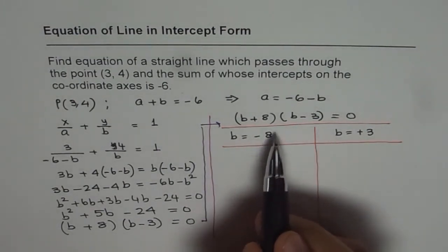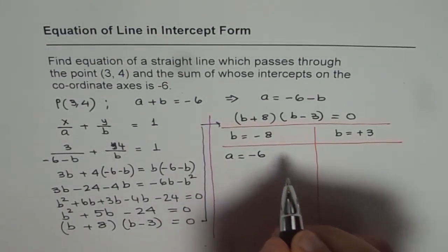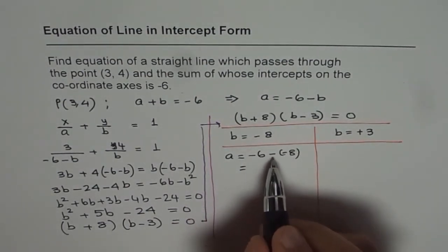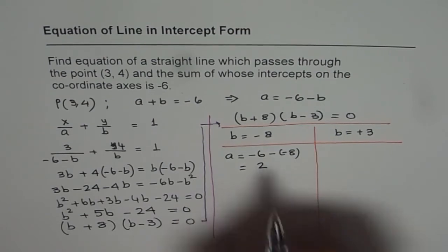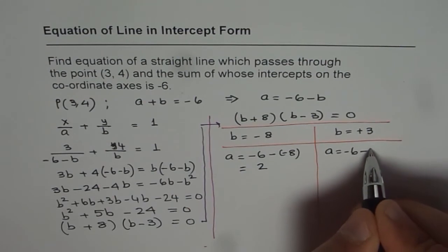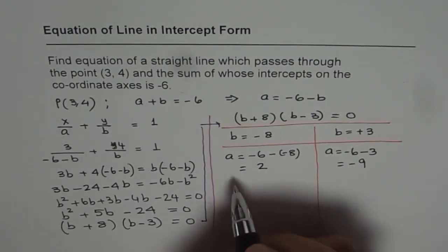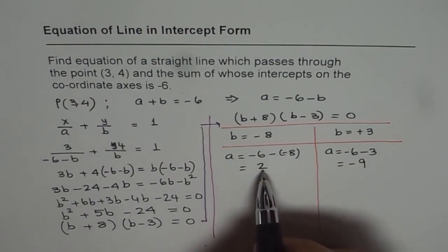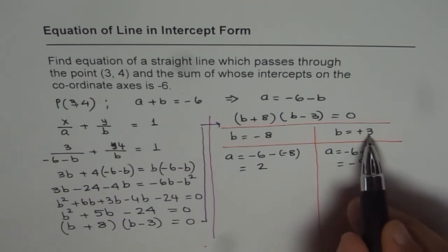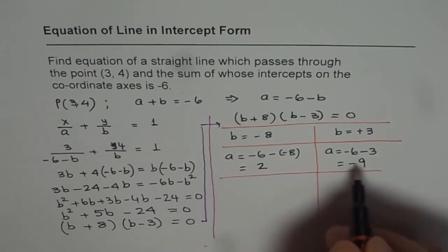If b is -8, then what is a equal to? We know a will be equal to -6 - (-8), which equals -6 + 8, which is 2. We get two values. Basically, we get one set where a is 2, b is -8, and the other set is a is -9 and b is +3. That gives us two different equations. These are the values of a and b.